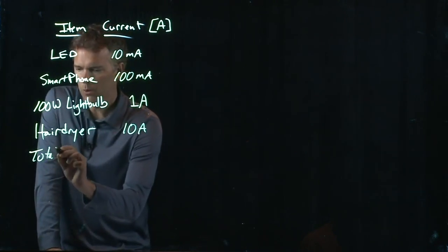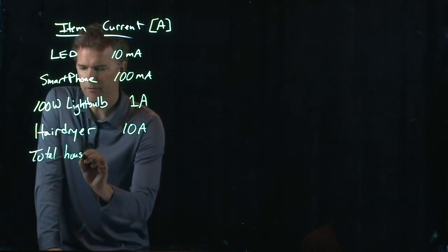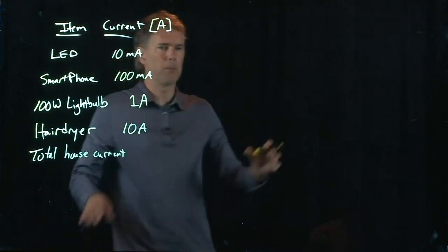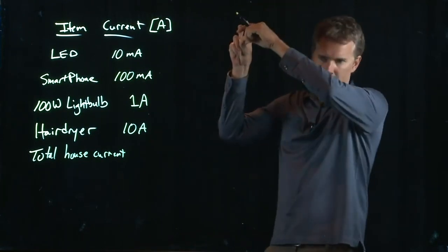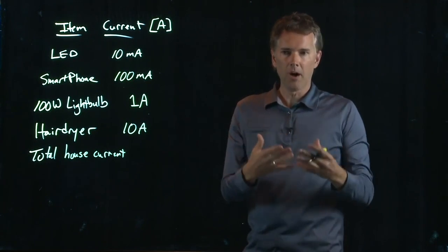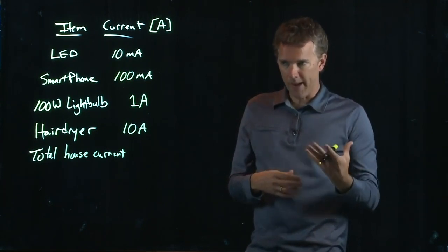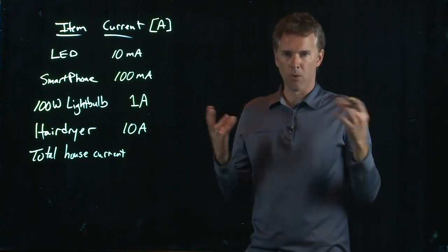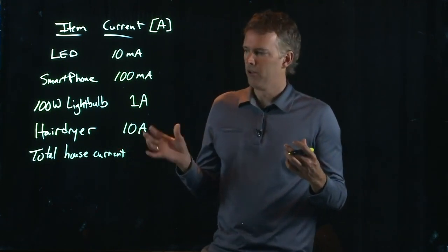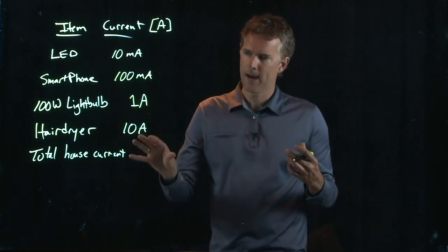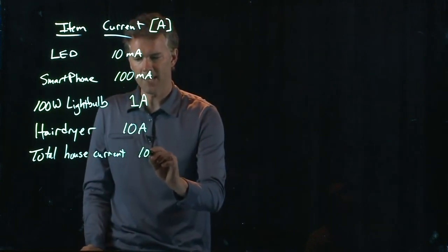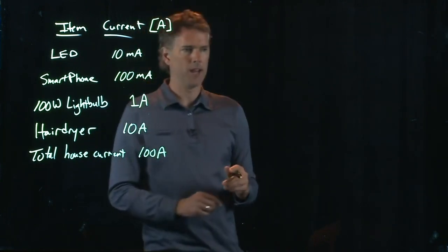What about the total current that's available coming into your house? There's a big power line on the telephone pole. There's a big metal wire that comes down to your house. And there is some amount of current that is available to your house. And that's it. If you draw more than that, the electricity company is going to have a problem with you. So how much is that total house current available? Well, it's basically another factor of 10, 100 amps.